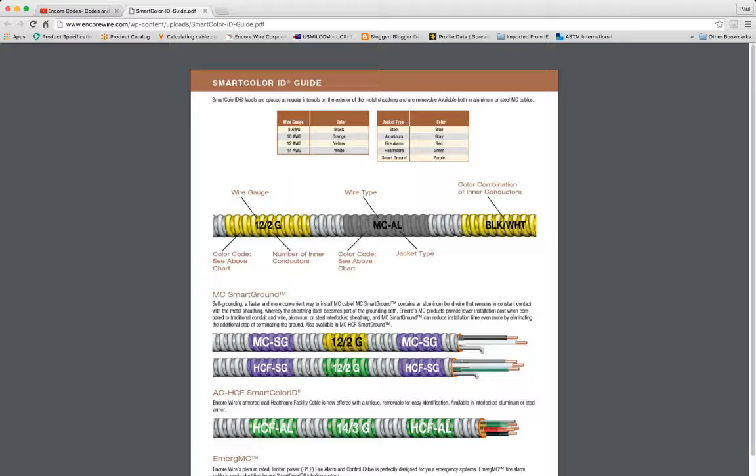If it was fire alarm, then it would have a red label on it. If it was a healthcare facility, it'd have a green label somewhere on it. If it's a smart ground product, it'll have a purple label on it. So as you can see here, this is a traditional MC, the first one we're looking at at the top, and it is black conductors and white conductors in this cable itself.